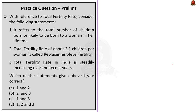Moving to the second question: with reference to total fertility rate, consider the following statements. Statement one says it refers to the total number of children born or likely to be born to a woman in her lifetime — this statement is absolutely correct. Statement two says total fertility rate of about 2.1 children per woman is called replacement level fertility — this statement is also correct, as 2.1 is the rate at which population stability is achieved.